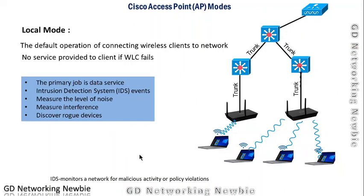The first mode is local mode — this is the default operation for connecting wireless clients to the network. In local mode, the primary job is data services, accounting for more than 90 percent of activities. In addition, the AP can perform intrusion detection system (IDS) events — monitoring the network for malicious activity or policy violations — measure noise levels and interference in the channel, and discover rogue (unwanted) devices.